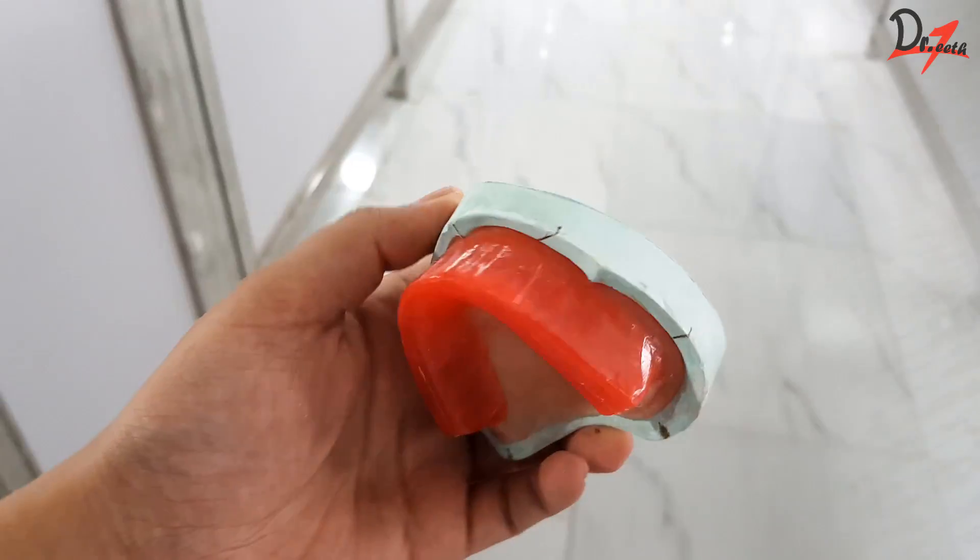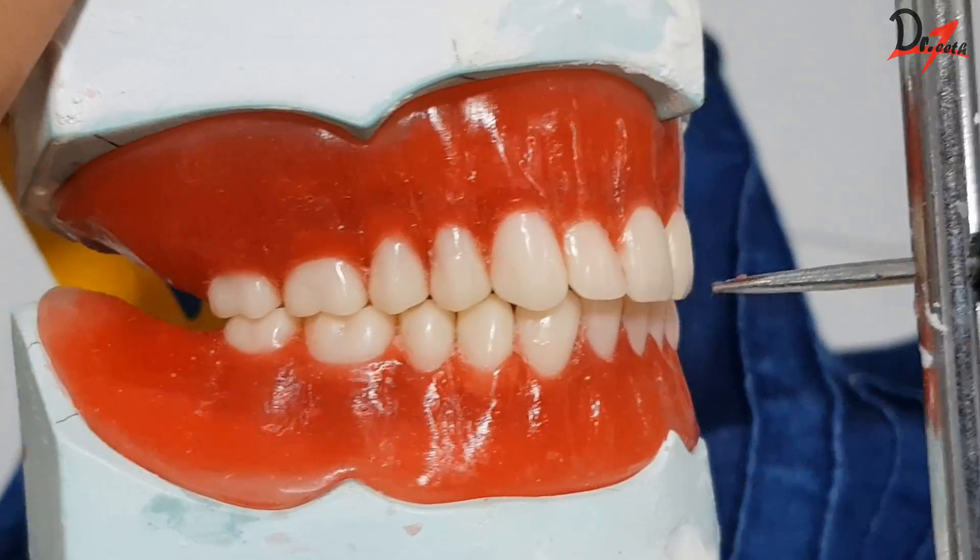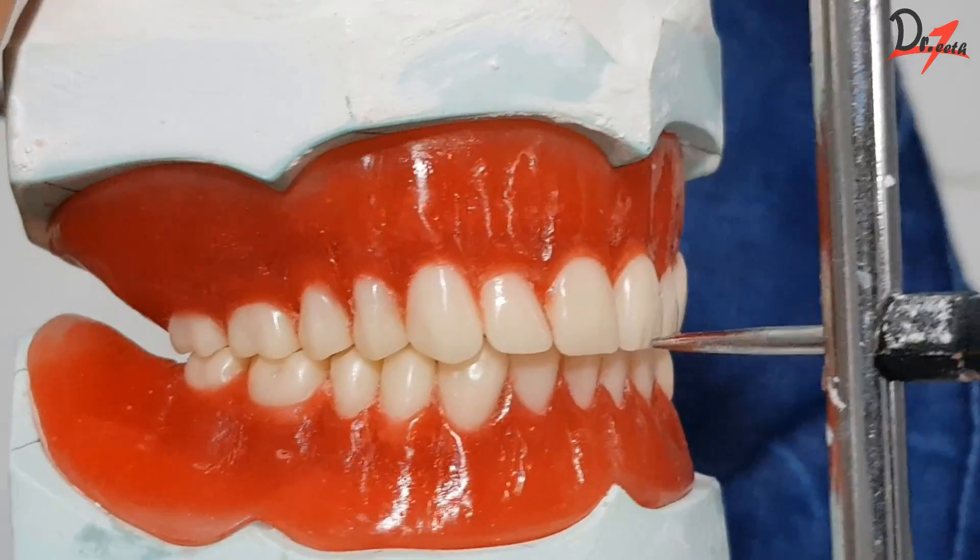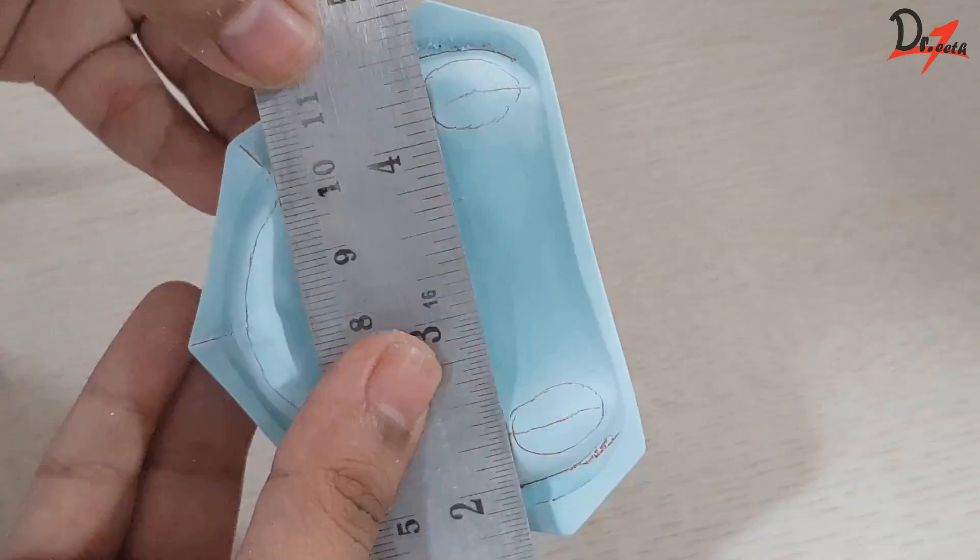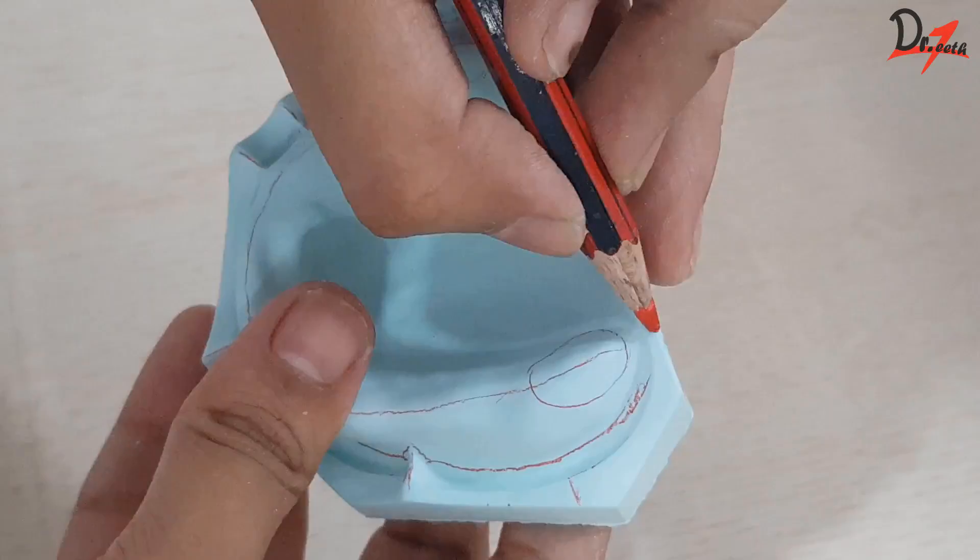Whether we are making a record base or we are making occlusal rim or while teeth setting, we need to have all these lines on the cast so that we don't make mistakes. These are the guidelines that we need to follow.